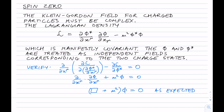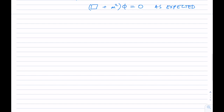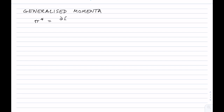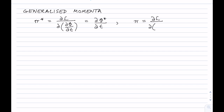Now we will generate the generalized momenta for this Lagrangian. If you don't remember this from classical mechanics exactly, don't worry about it too much. The first generalized momentum is pi-star, and another generalized momentum is the derivative dL/d(d phi-star/dt), which equals d phi/dt. That's the generalized momentum, and then we can write the Hamiltonian density.